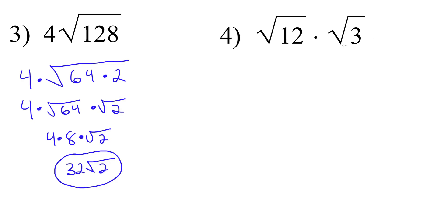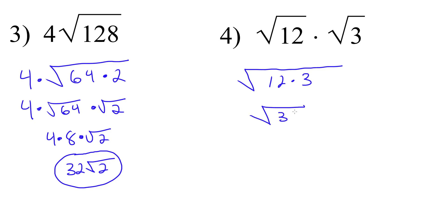For number 4, we're doing some multiplication. We have radical 12 times radical 3. If you're multiplying two radicals together, you could just combine them together in one radical. So we could have radical 12 times 3, and then multiply: 12 times 3 is 36. So we have radical 36, and we know what the square root of 36 is — positive 6. For the purposes of the quiz, all I care about is the positive number, so our answer here is 6.